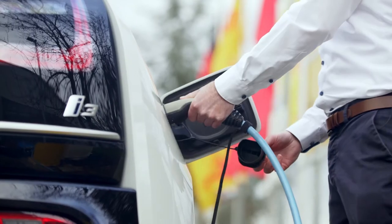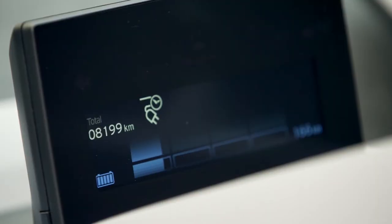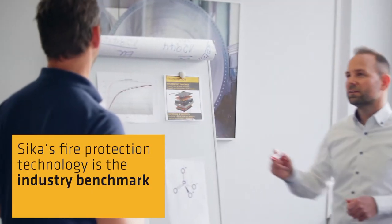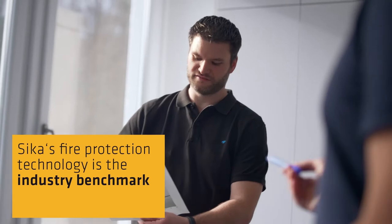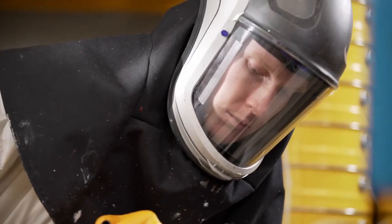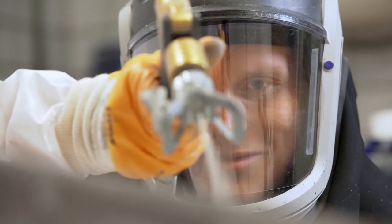The batteries of electric vehicles are attaining ever higher performance levels. At the same time, the requirements in terms of heat management and fire protection are increasing. Sika's fire protection coating for battery casings can be easily and efficiently applied and offers the highest level of safety.